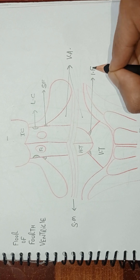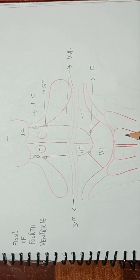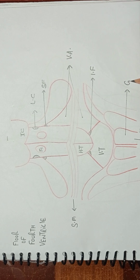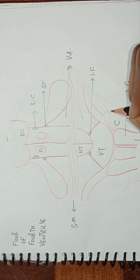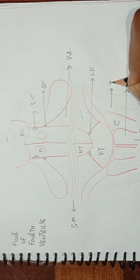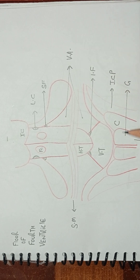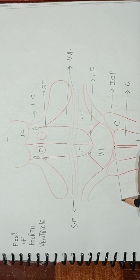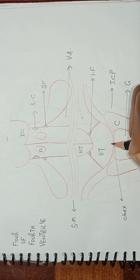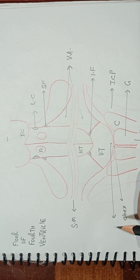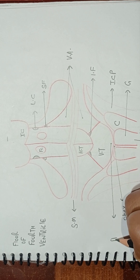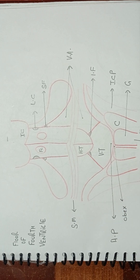This structure here is the gracile fasciculus. This is the cuneate fasciculus. And this structure right here is the inferior cerebellar plank. This area right here is called the obex. This area right here is called the area postrema. So this is the diagram of the floor of the fourth ventricle. Thank you.